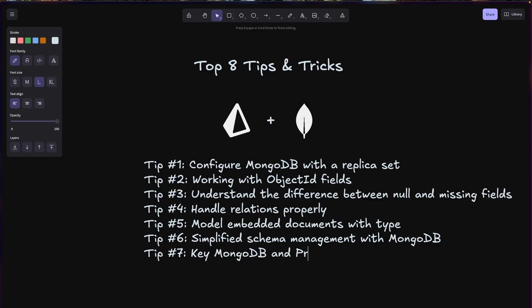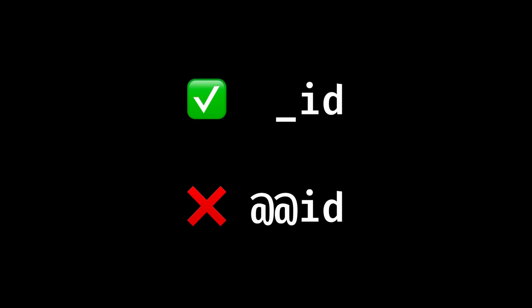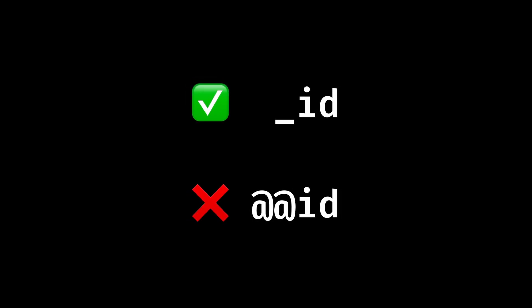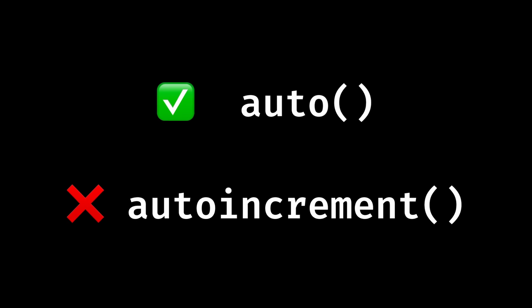Tip number seven: key MongoDB and Prisma design considerations. MongoDB uses a single underscore ID field for primary keys rather than composite IDs. For ID generation, use auto with ObjectId instead of auto increment. Cyclic references with referential actions work best with no action to maintain data consistency. Some MongoDB-specific types like Decimal128 have partial support in the current version of Prisma ORM. These points highlight the fundamental differences between document databases and relational databases. Understanding these technical distinctions helps you create applications that work better with MongoDB's specific structure.